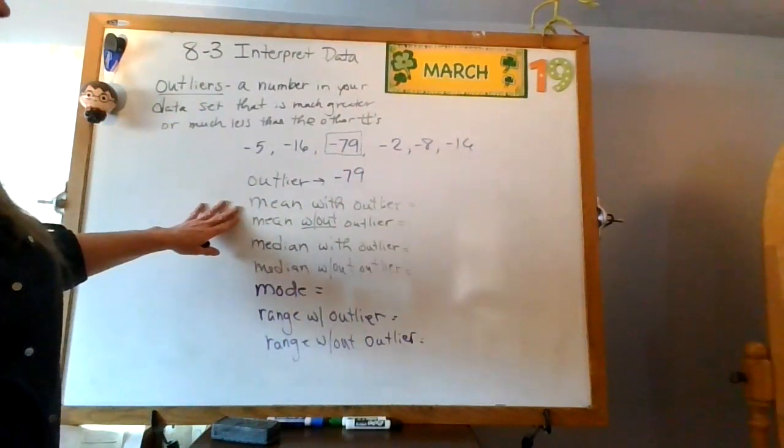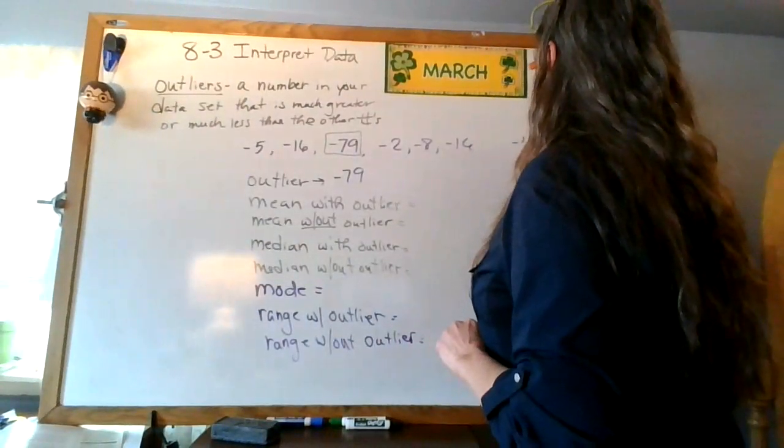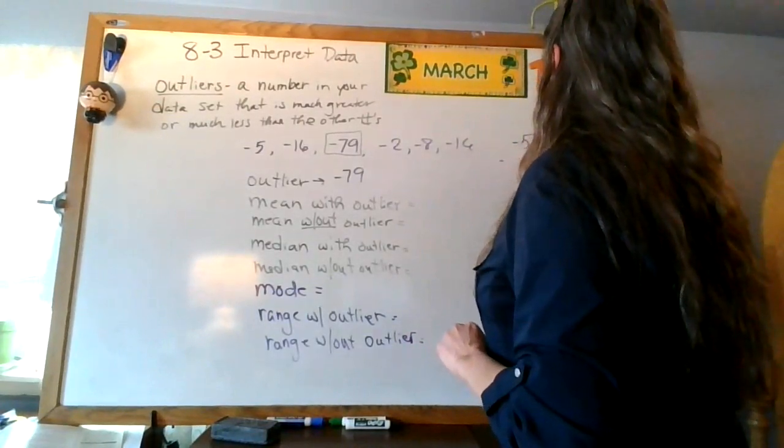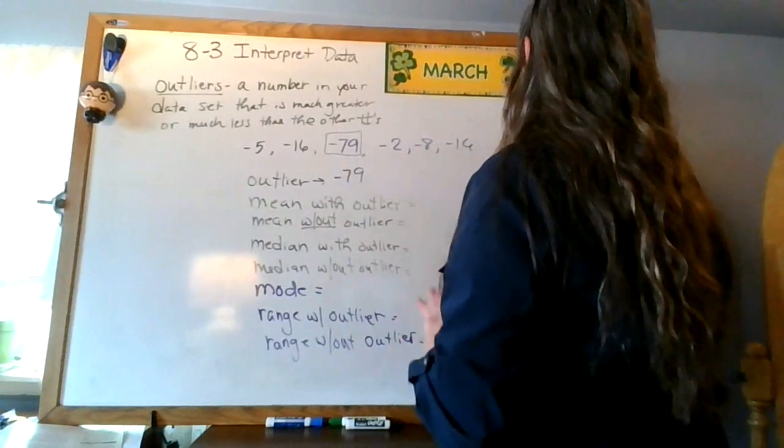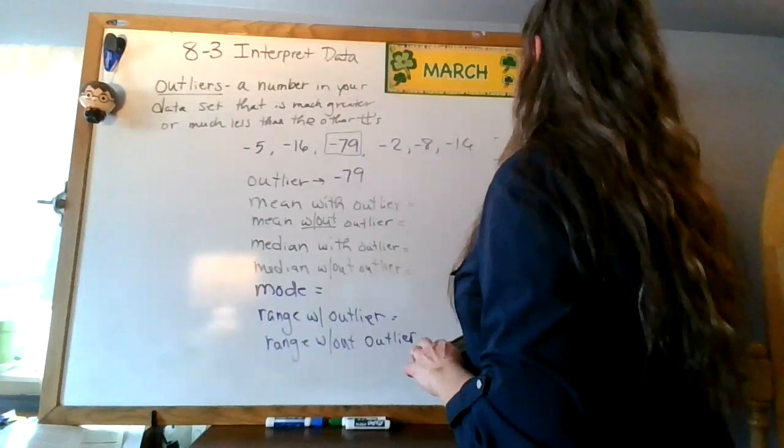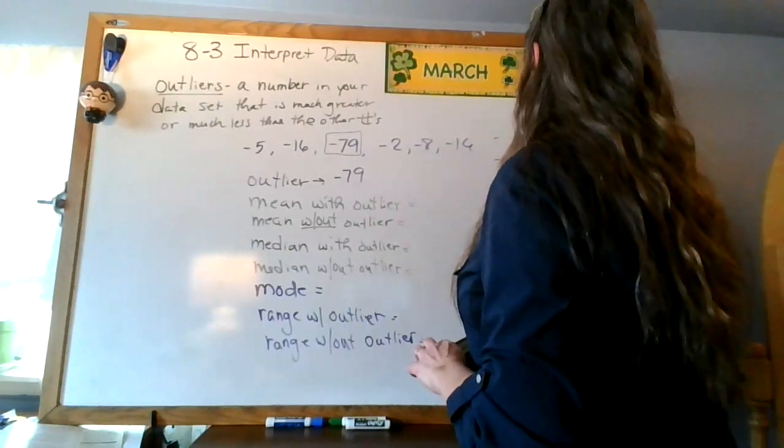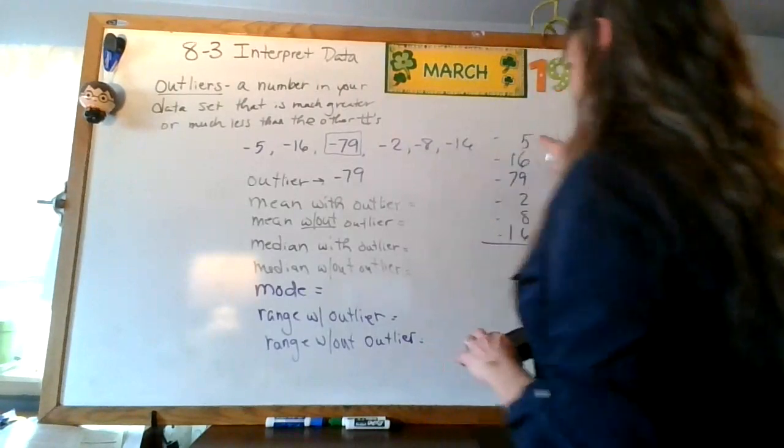So let's find our mean with the outlier. So I'm going to add all these together. So I've got negative 5, negative, and probably I'm just going to write these.